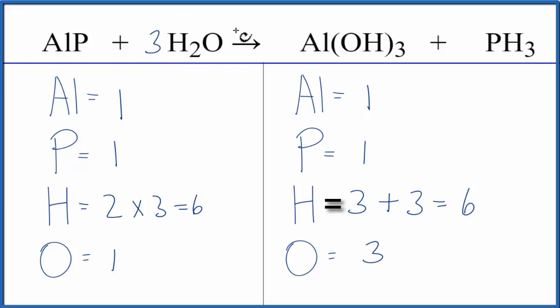But the 3, it applies to everything, so the 1 oxygen times the 3, that gives us 3 oxygens, which works out really well, because now everything is the same on each side of the equation, and we're done. This equation is balanced.